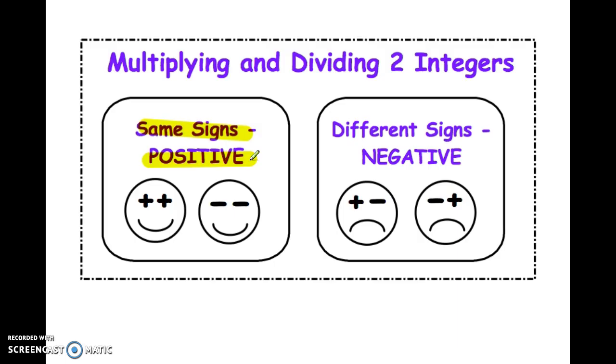If you have different signs, your answer is negative. So if you have one positive and one negative that you're multiplying or dividing, you're going to get a negative answer. So you might want to copy this graphic down if you like it like I do, just to make it nice short and simple.